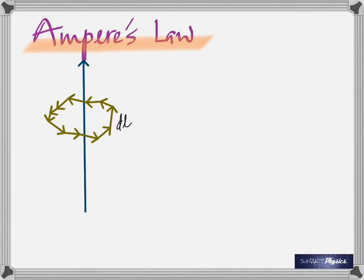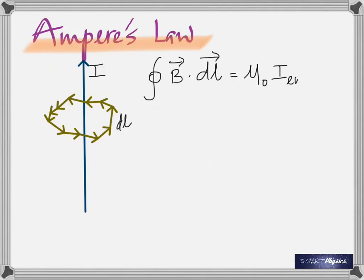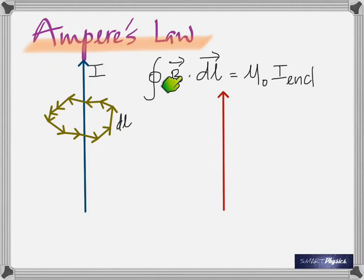The current through the conductor is I, flowing upwards. According to Ampere's Law, the closed integral of B dot DL is equal to μ₀ times the current inside the loop. When you see that symbol, it means it's a closed integral of the dot product of B and the length of the segment. The dot product always comes out to cosθ. That equals μ₀ times the current inside the loop, which in this example is I.